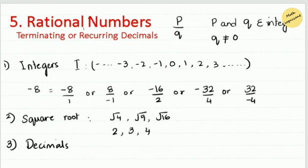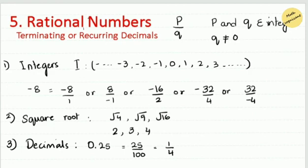The third type is decimals. When considering a decimal as a rational number, it must be either terminating or recurring. Terminating means the number stops — for example, 0.25 can be written as 25/100. When converting a decimal to a fraction, count the digits after the decimal point. Simplifying 25/100 gives 1/4, so 0.25 is a rational number.